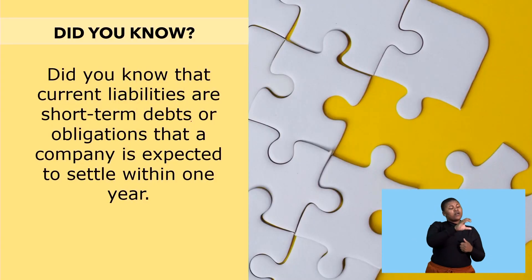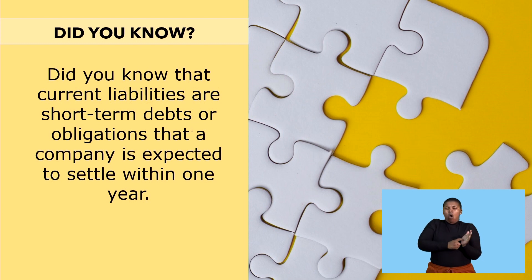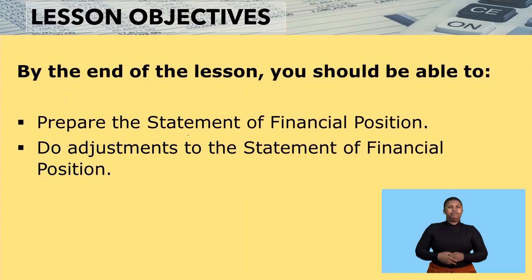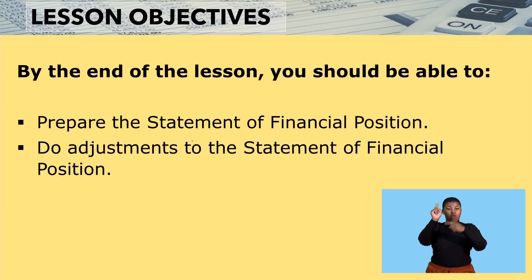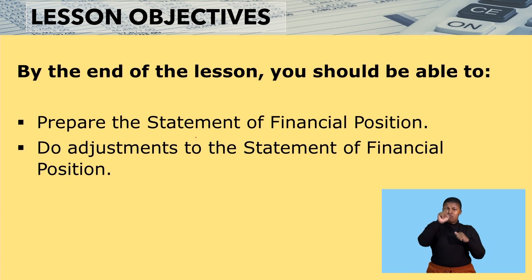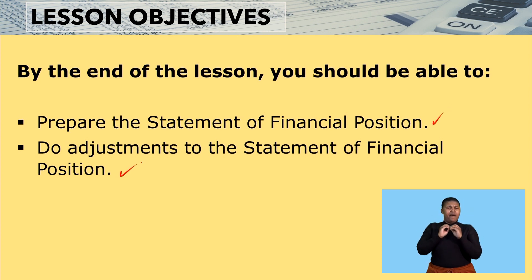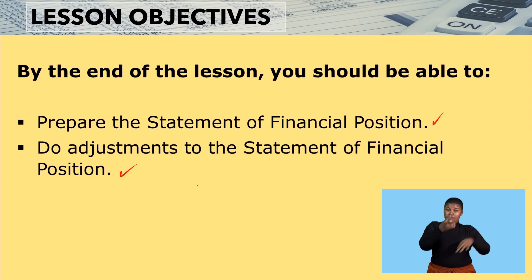Did you know that current liabilities are short-term debts or obligations that a company is expected to settle within one year? Here are today's lesson objectives. By the end of the lesson you should be able to prepare the statement of financial position, and you must also be able to do adjustments to the statement of financial position.